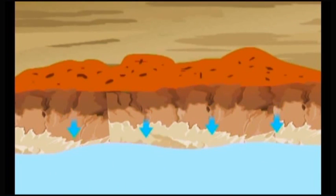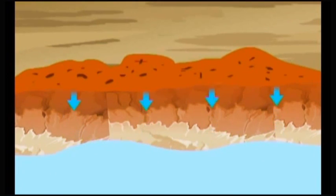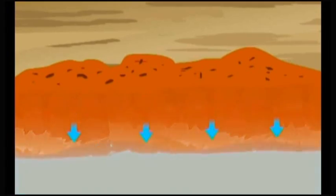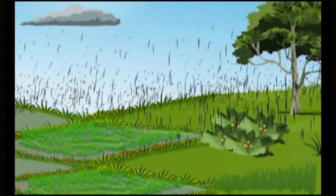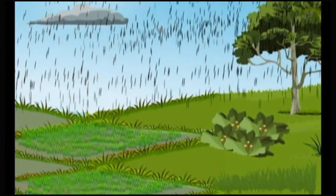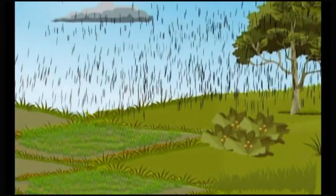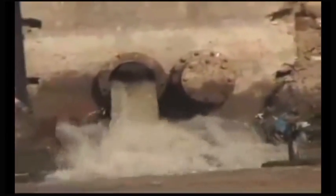Plants and animals cannot survive in the soil if it is too acidic or alkaline. Acid rain also has the same effect on soil. Soil is also polluted by the deposition of unwanted inorganic and organic substances.